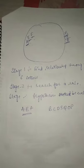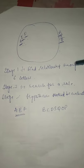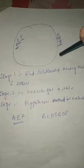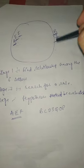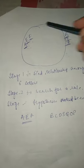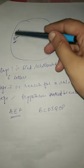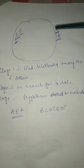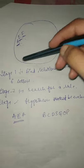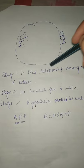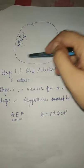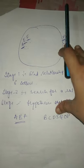अब एक example के through हम ये model समझेंगे. First stage में हम problem को divide करते हैं. Suppose एक circle है, उसमें letters दिए हुए हैं — A, B, C, D, E, F. तो इनके बीच में first stage में हमने देखा कि relationship among six letters — ये English के alphabets हैं और इनमें कोई relationship है.